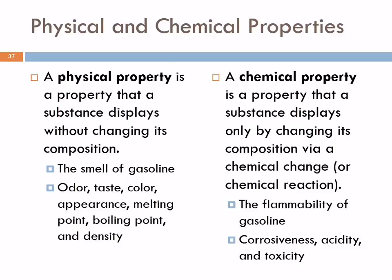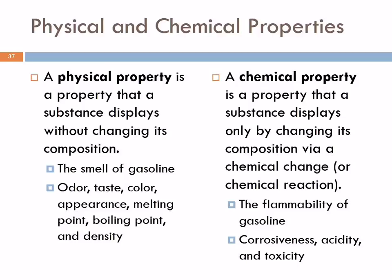We also have properties, and we divide these into chemical and physical properties. A physical property is a property that the substance displays without changing its composition — something we can observe without inducing a chemical change. So the smell of gasoline: gasoline has a distinctive smell, and when you smell it, it doesn't change what the gasoline is. Things like odor, taste, color, appearance, melting point, boiling point, and density are all physical properties. We can measure the density of something without changing its composition.